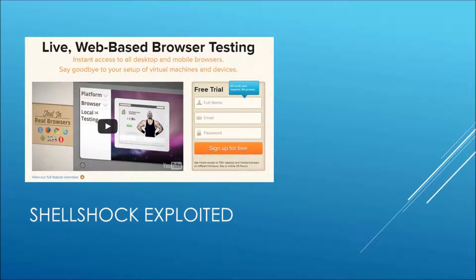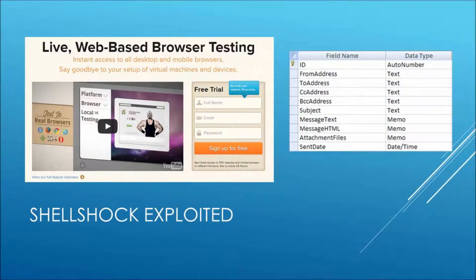Regardless of BrowserStack's security efforts, on November 12th the company was targeted by the shellshock exploit and some users' private information was compromised. An attacker found an old prototype server that had not been patched and injected commands that copied an email table from the server's database to their own machine. The lost information included emails, hashed passwords, and recently tested URLs for about 5,000 users — nearly one-fifth of the entire database.